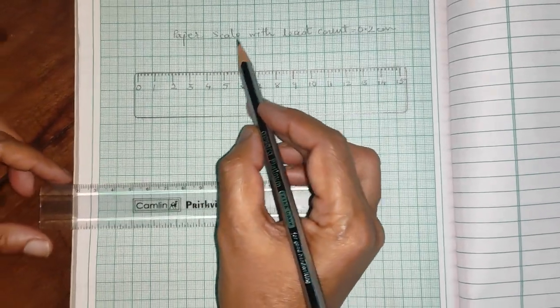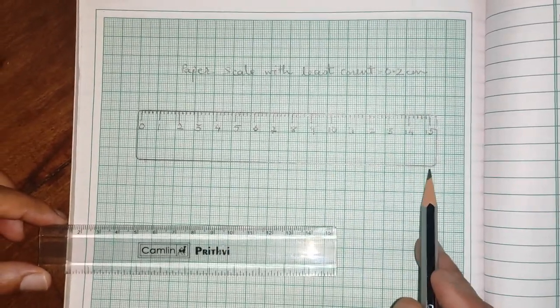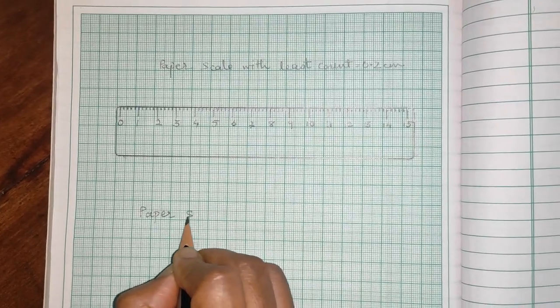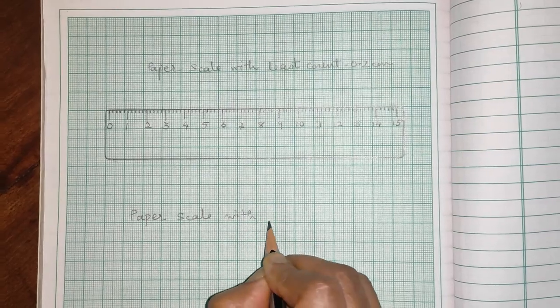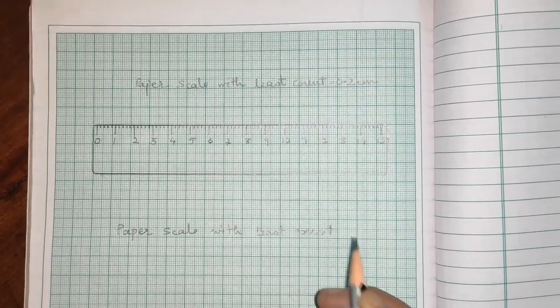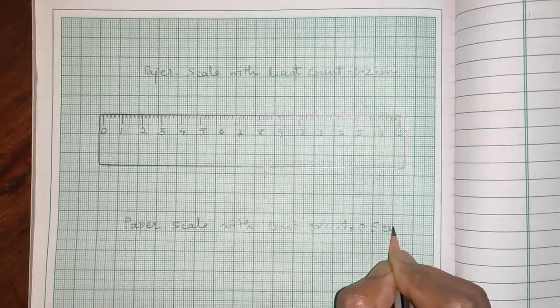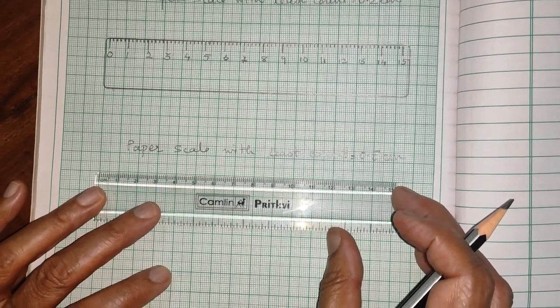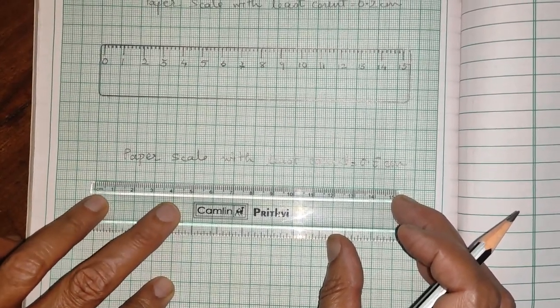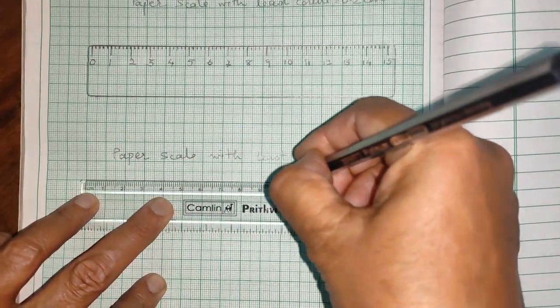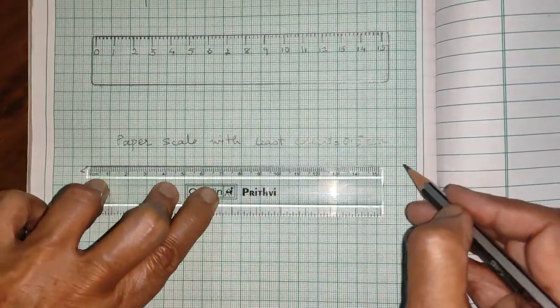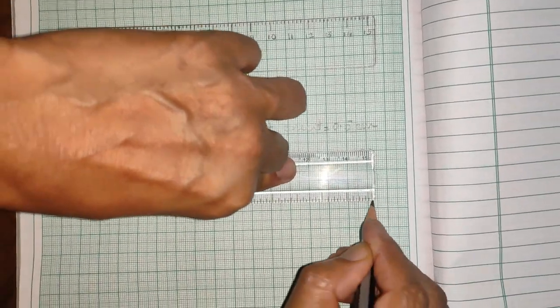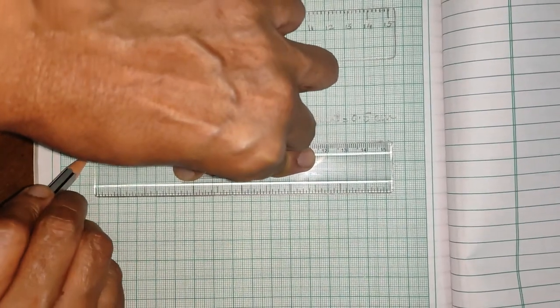So, my paper scale with least count 0.2 cm is ready. Similarly, now, I have to make a paper scale with least count 0.5 cm. Again, I can draw the outline this way. Okay, darken it. Similarly here. It should be the same way as I have done it before, okay?